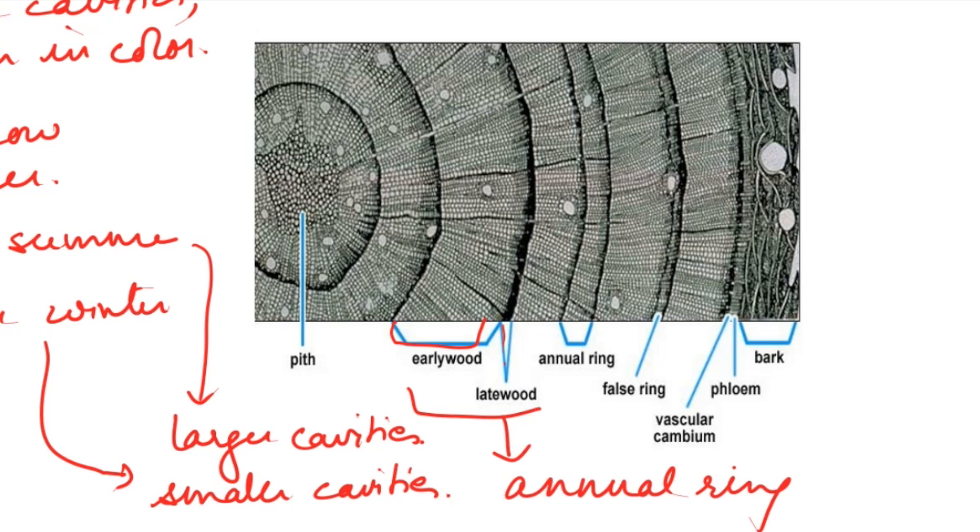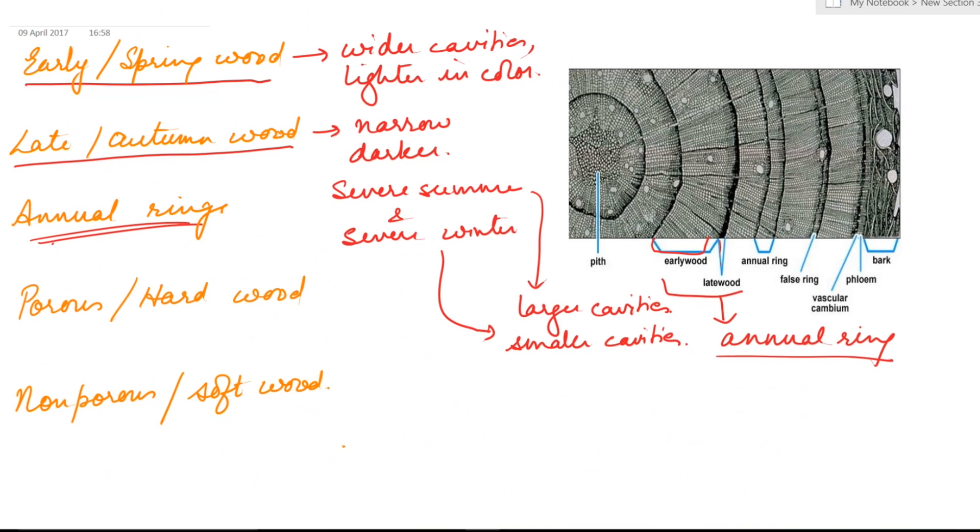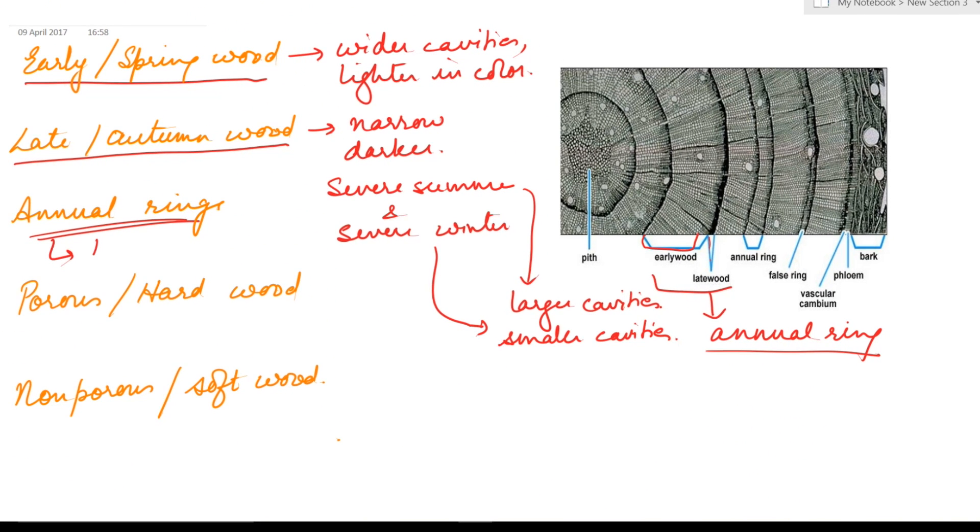A ring of vessels of larger cavity and the ring of vessels of smaller cavity together form the annual rings, which help in calculating age of the plant. Study of age of the plant is known as dendrochronology.